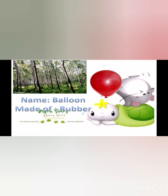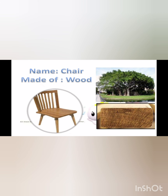A balloon is made of rubber, and you learned about rubber in your learner's book — rubber comes from trees. So rubber is a natural material that helps us make balloons and erasers that we use in school. Another natural material that comes from trees is wood, and we make chairs and furniture out of wood. Wood is also a natural material.